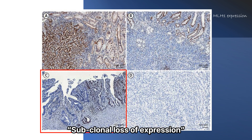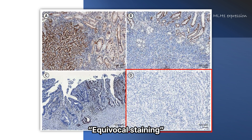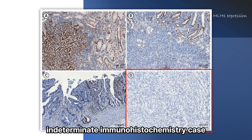Third, subclonal loss of expression can be defined as loss of staining in a part with demarcated borders in gastric cancer cells with clear staining of surrounding tissue nuclei. Fourth, equivocal staining is a state in which neither the surrounding tissue nor the gastric cancer tissue is stained well. Subclonal loss of expression or equivocal staining was classified as an indeterminate immunohistochemistry case.